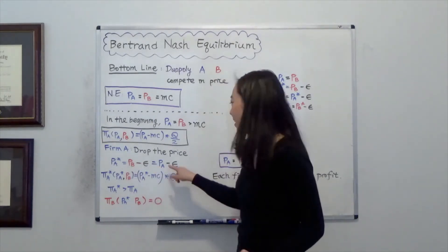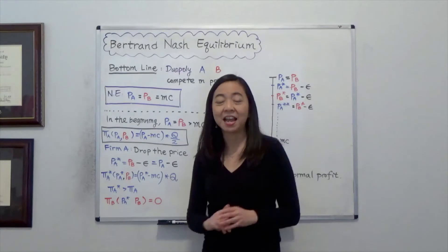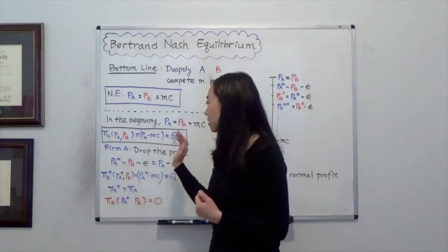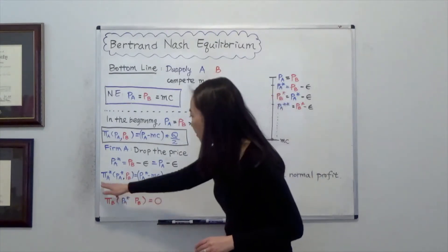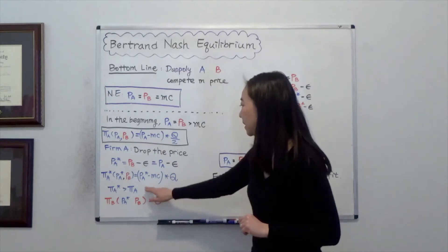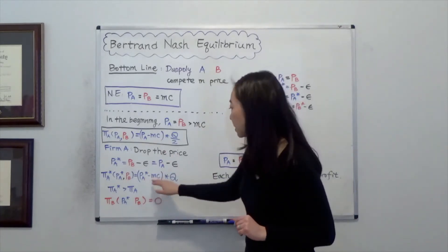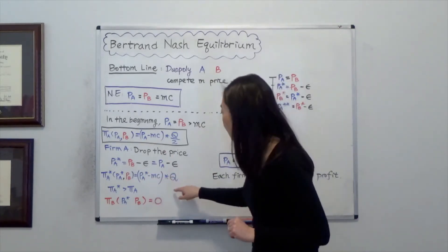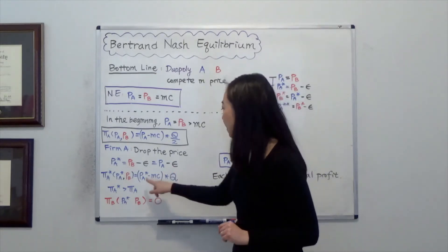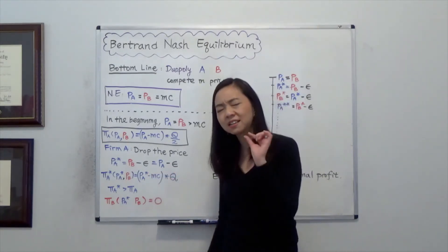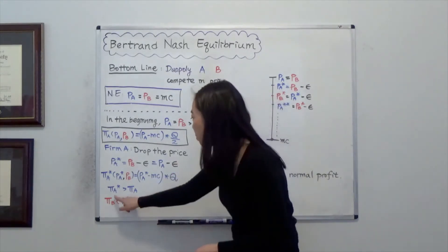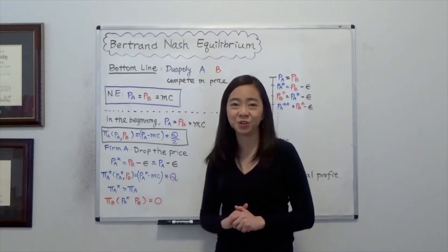Now because the products are identical, firm A is going to grab the entire market. So we have a new profit where the profit of firm A equals PA star minus the marginal cost times the entire market quantity. So we know that because PA star is only a tiny bit lower than PA, our new profit is going to be higher than old profit.